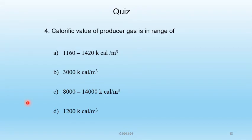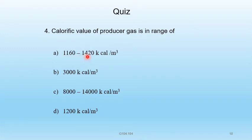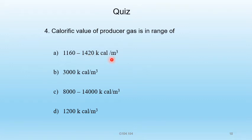Question 4 — Calorific value of producer gas is: A) 1160 to 1420 kcal/m³, B) 3000 kcal/m³, C) 8000 to 14000 kcal/m³, D) 200 kcal/m³. The correct answer is A: 1160 to 1420 kilocalories per meter cube.